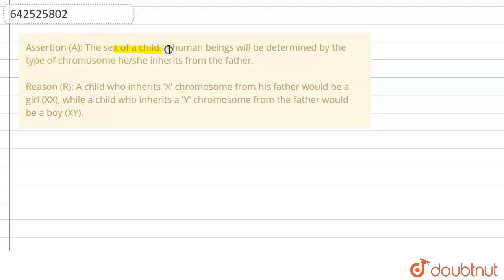Assertion says that the sex of a child in human beings will be determined by the type of chromosome he or she inherited from the father. And the reason is that a child who inherited X chromosome from his father would be a girl.